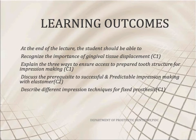At the end of this lecture, you are expected to know the importance of gingival tissue displacement. You should be able to explain the three ways to ensure access to prepared tooth structure for impression making, discuss the prerequisites to successful predictable impression making with elastomers, and describe different impression techniques for fixed prosthesis.